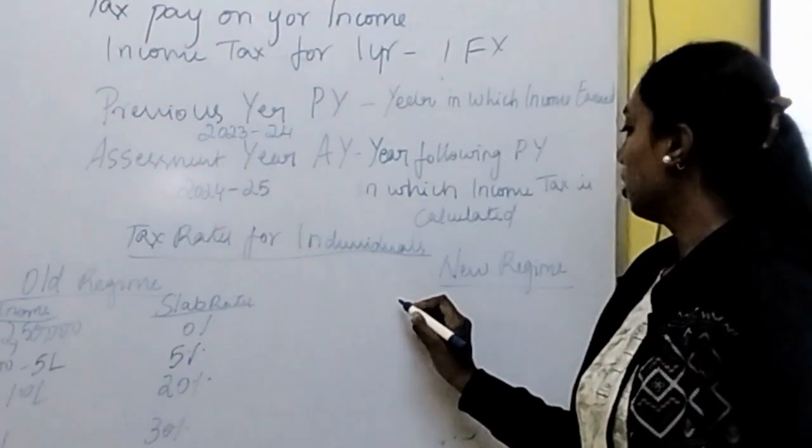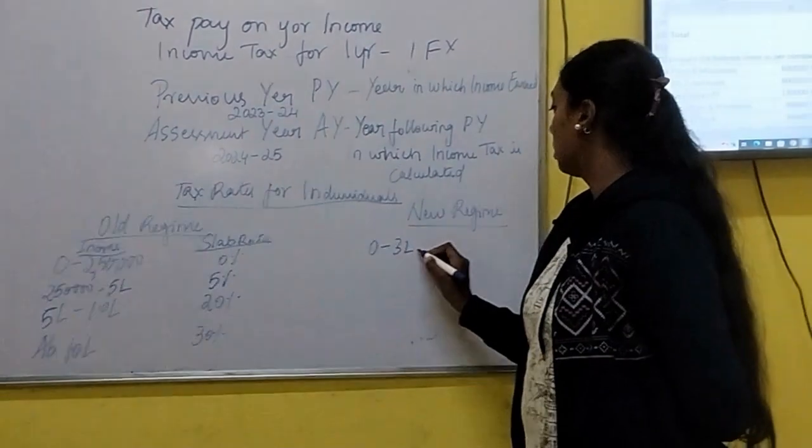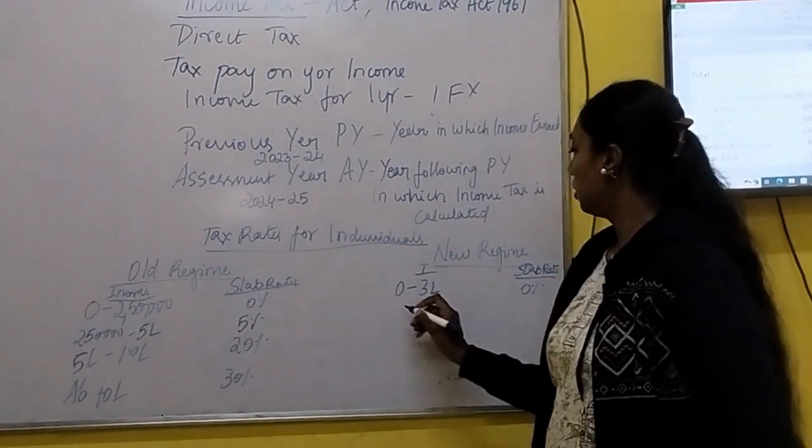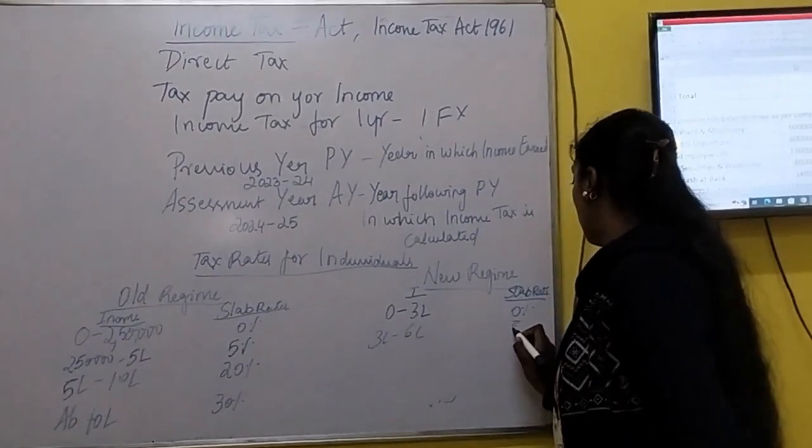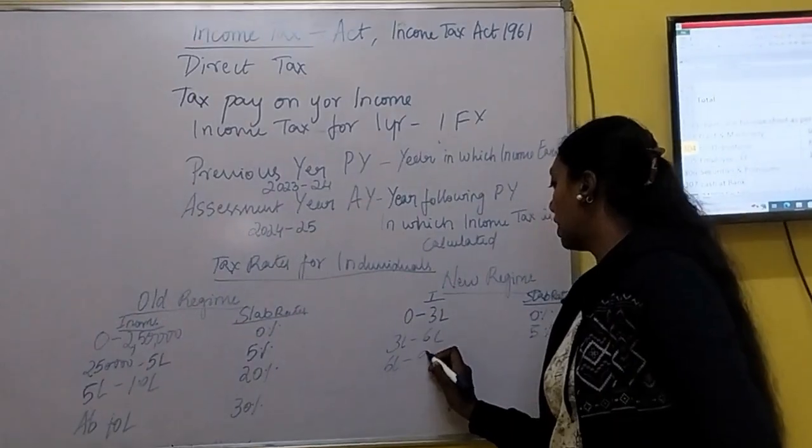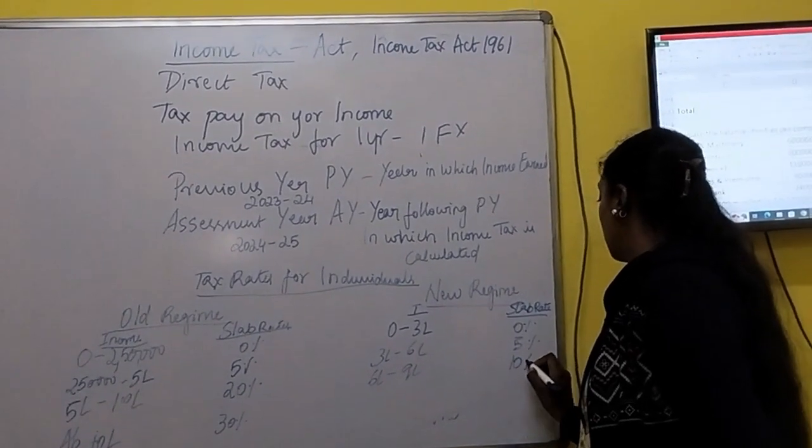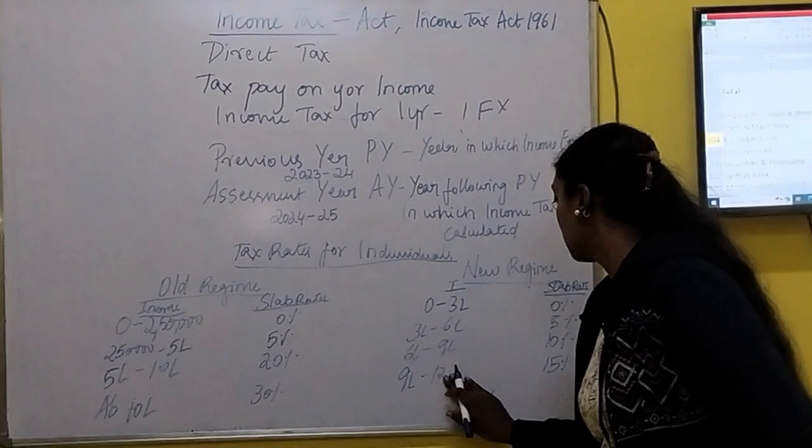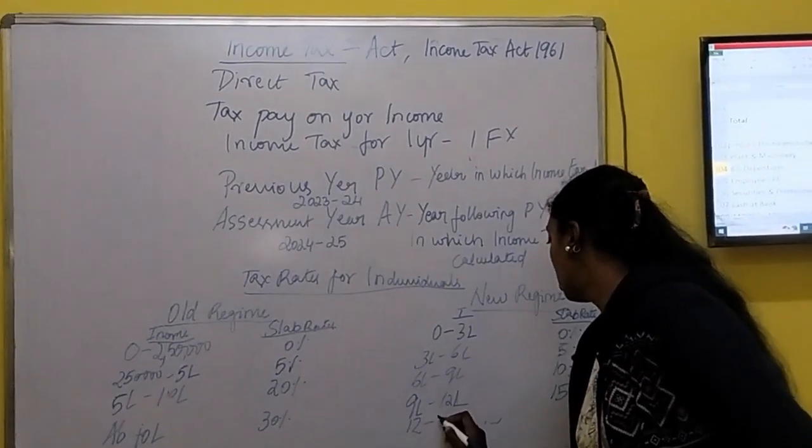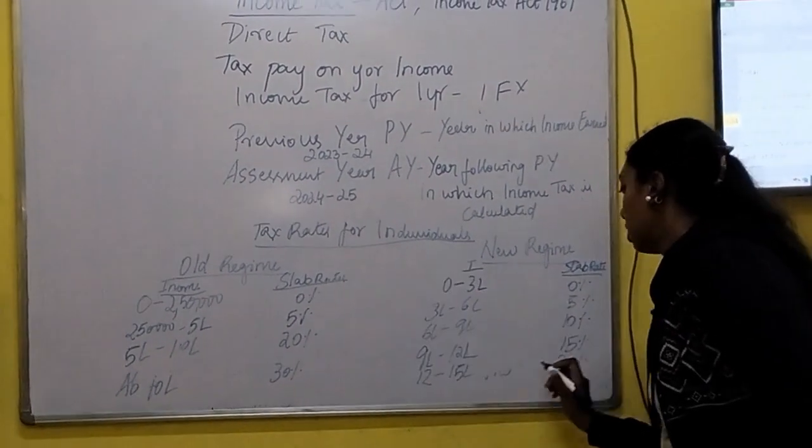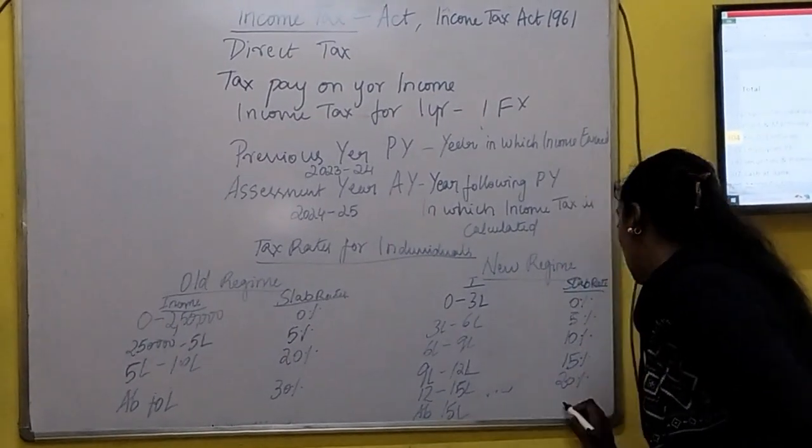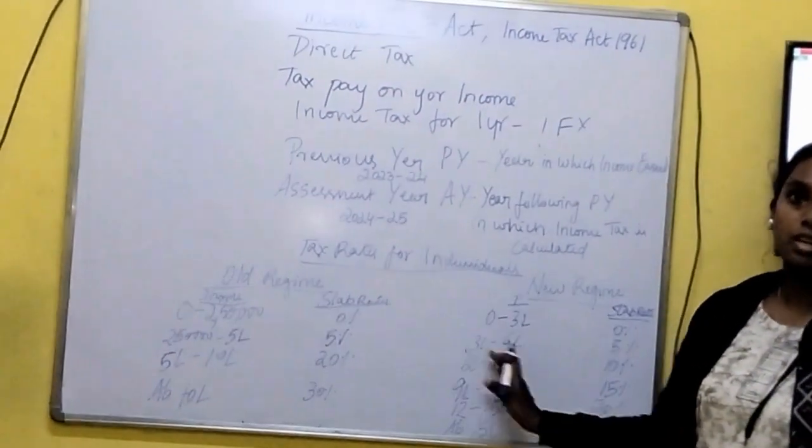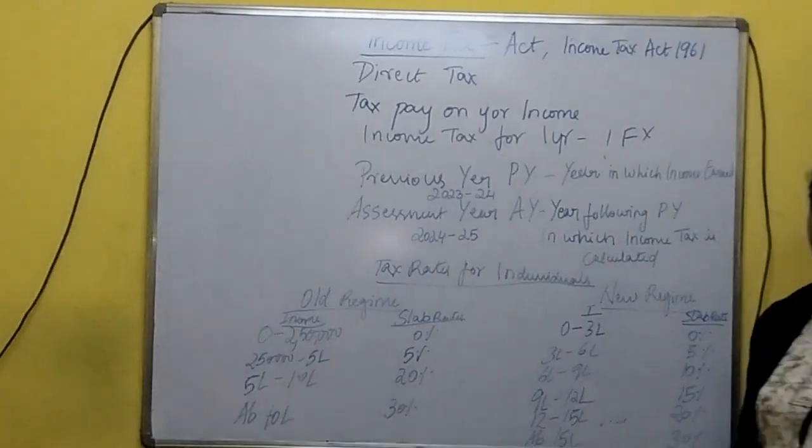Next, you will see new regime. In new regime, you have 0 to 3 lakhs at 0%. Then 3 lakhs to 6 lakhs is 5%. 6 lakhs to 9 lakhs is 10%. Then 9 lakhs to 12 lakhs is 15%. Then 12 lakhs to 15 lakhs is 20%. Then above 15 lakhs is 30%. Individual has the opportunity to choose old regime or new regime, whichever is beneficial to the individuals.